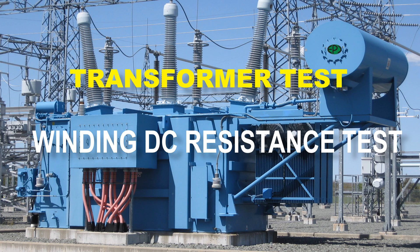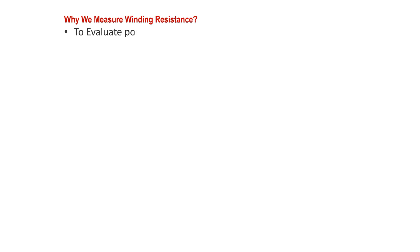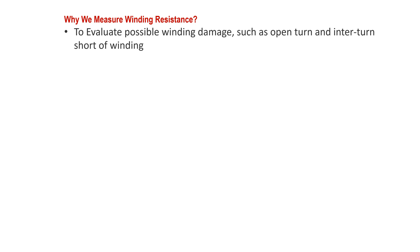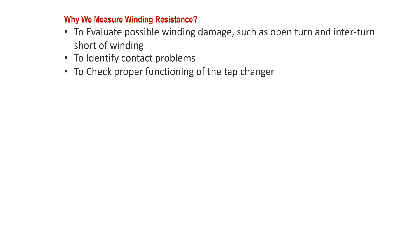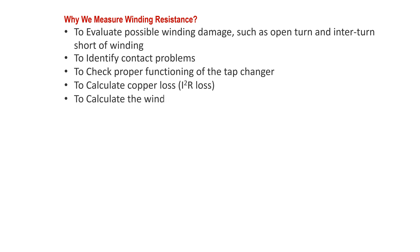Please watch why we measure winding resistance: to evaluate possible winding damage such as open and inter-turn short of winding, to identify contact problems, to check proper functioning of the tap changer, to calculate copper loss (I²R loss), to calculate the winding temperature, and to identify loose connections and broken strands of conductor.